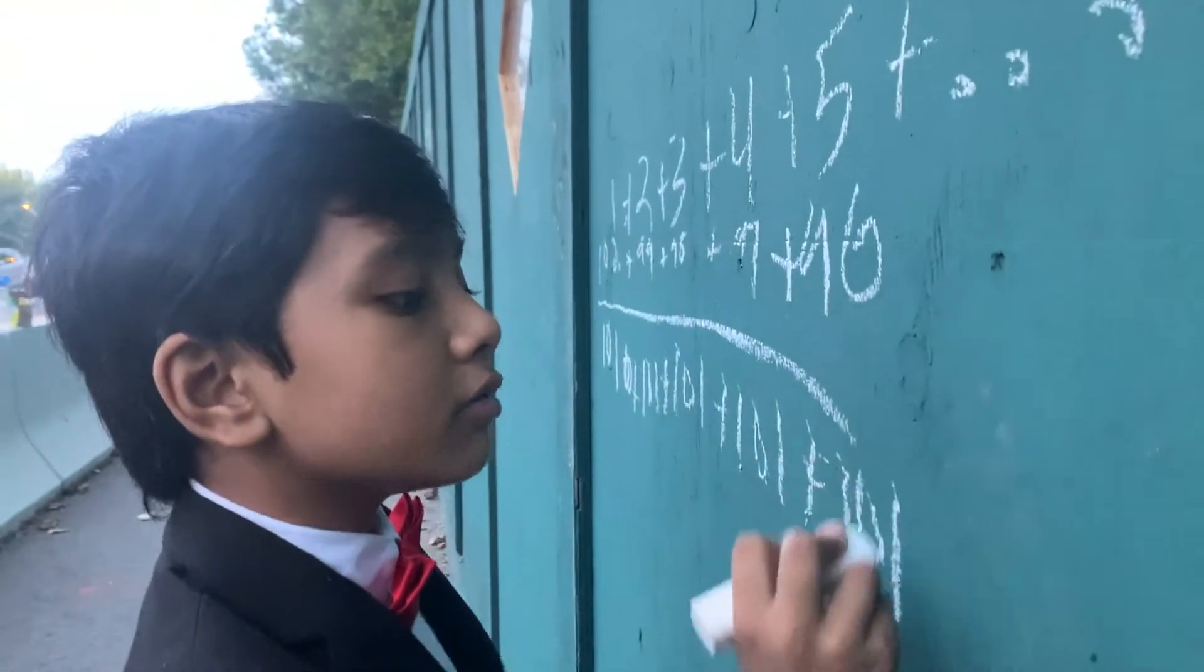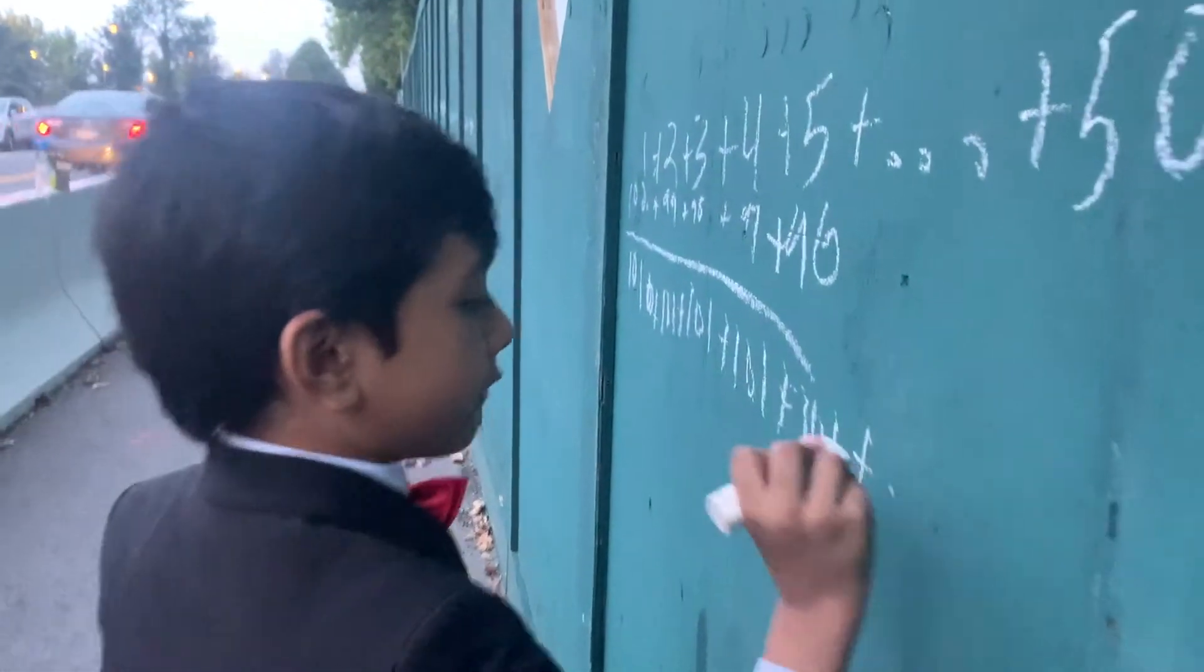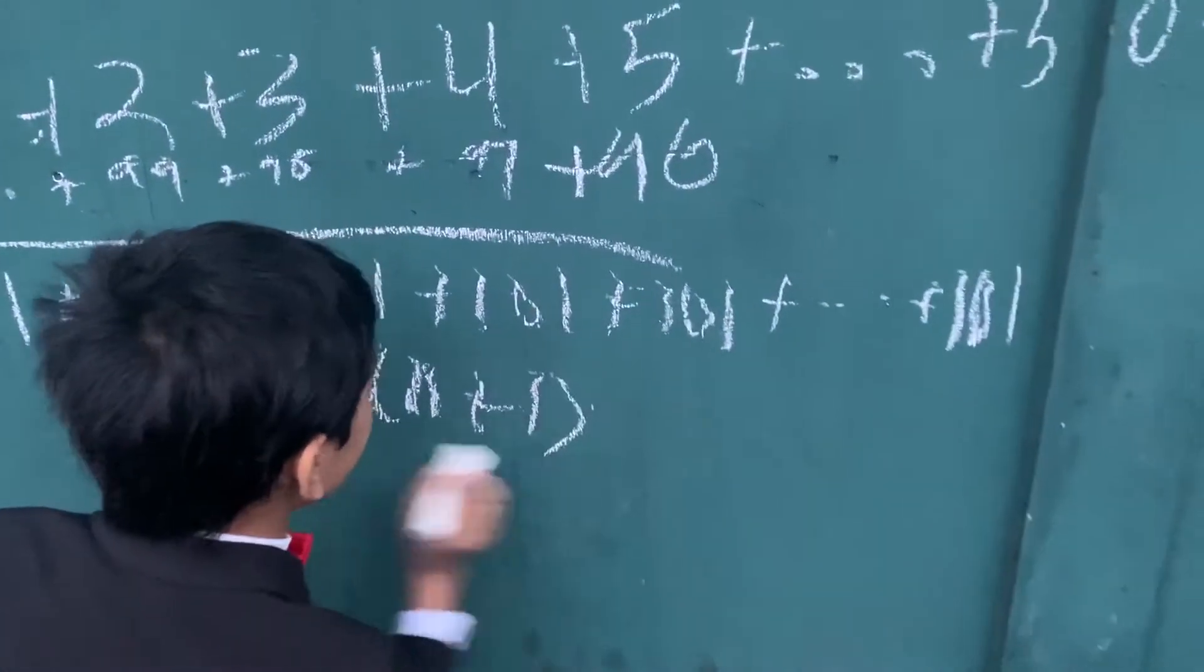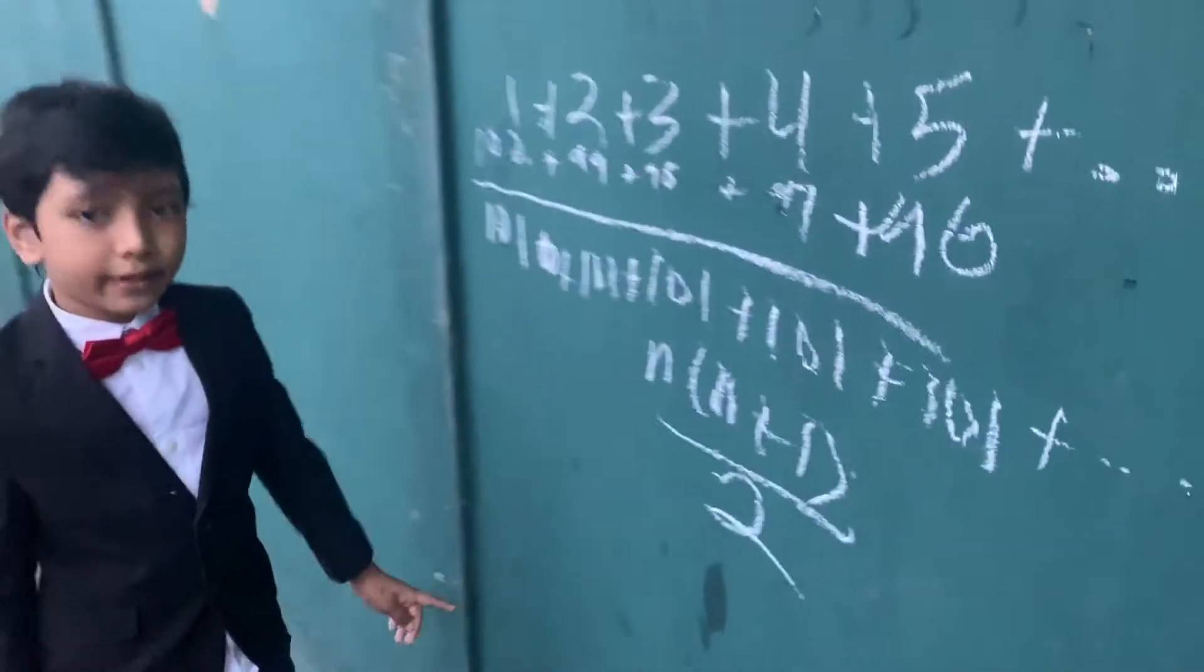Using that inference, we can make the equation n times n plus 1 over 2.